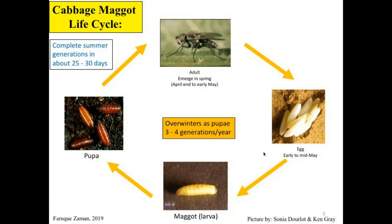Let's talk about the cabbage maggot life cycle. Cabbage maggot flies have a simple life cycle with four stages: egg, larvae, pupae, and adult. They overwinter as pupae in the soil, and first adult emergence occurs in late April to mid-May on Long Island — the emergence pattern may vary depending on location and weather. Egg laying occurs a few days after spring emergence, then it takes a couple of days to hatch into a larvae. It takes about 10 to 12 days for pupation, then another 10 to 12 days to emerge as an adult — so about 28 to 35 days to complete the full life cycle. On Long Island they produce three to four generations per year.